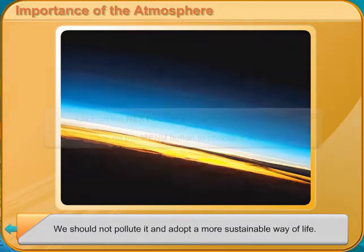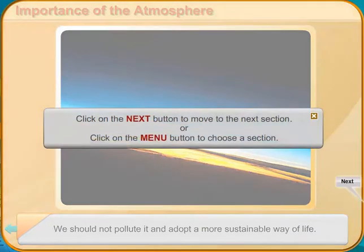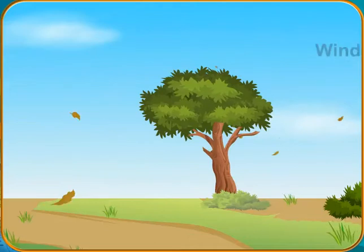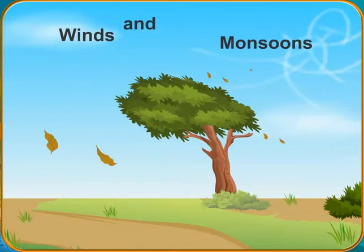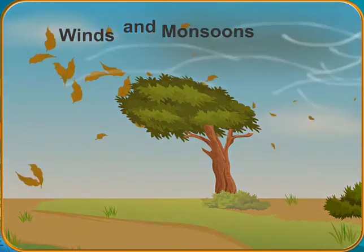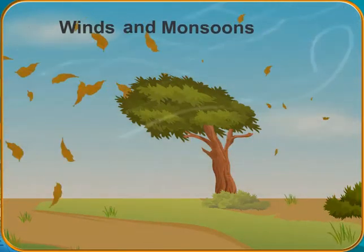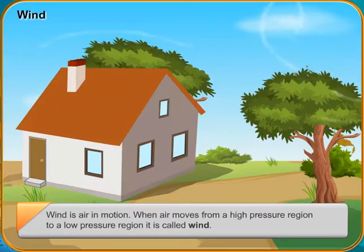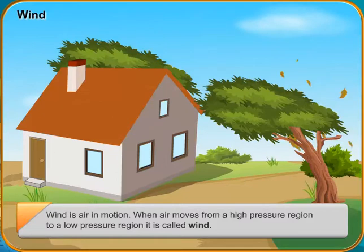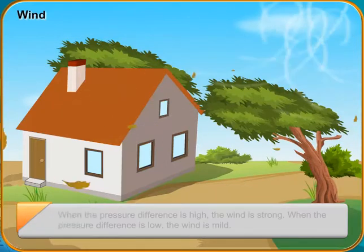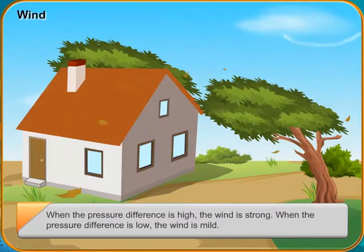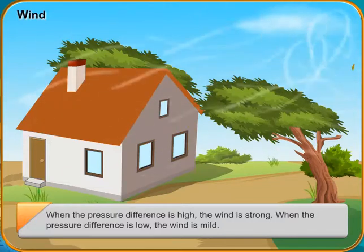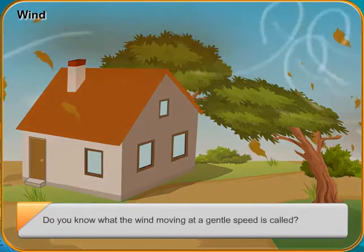Winds which blow throughout the year in a particular direction are called planetary winds or permanent winds. There are three kinds of planetary winds: trade winds, westerlies and polar winds. Trade winds move from the subtropical high pressure regions to the equatorial low pressure region. They blow from the north-eastern direction in the northern hemisphere and from the south-eastern direction in the southern hemisphere. These winds are constant in their track.